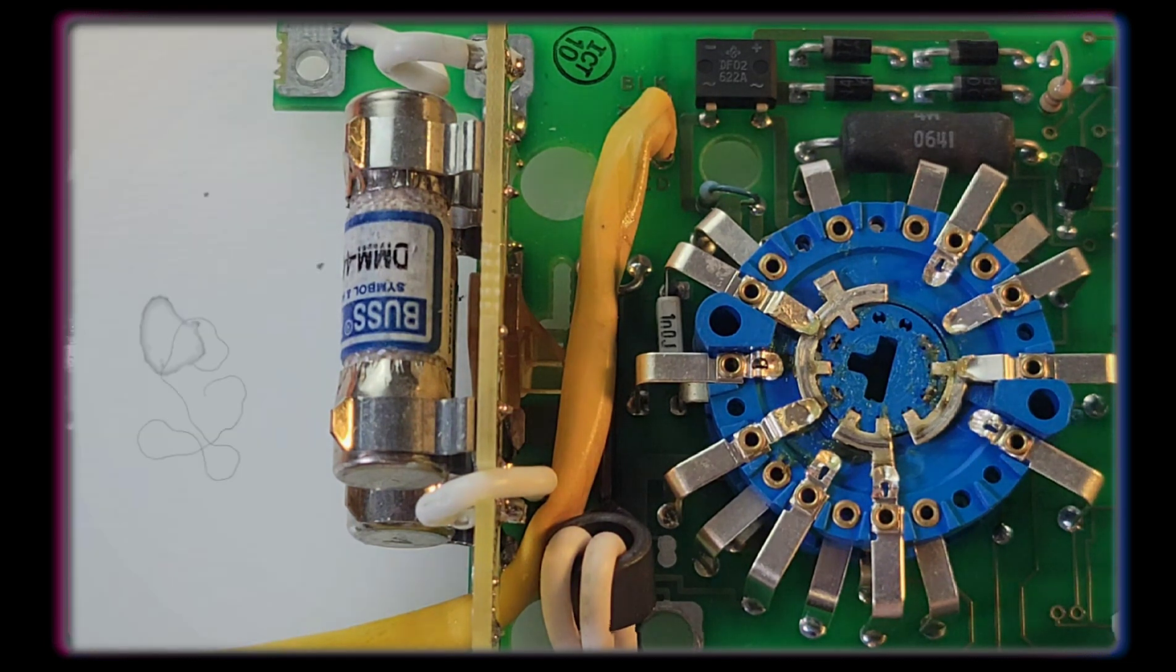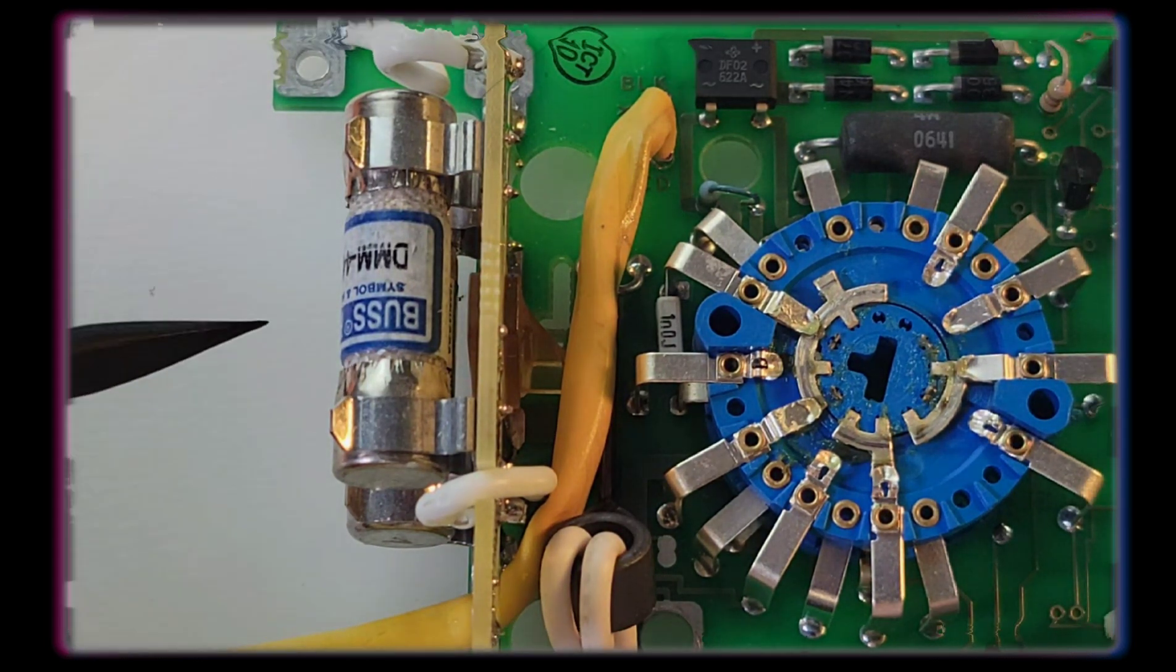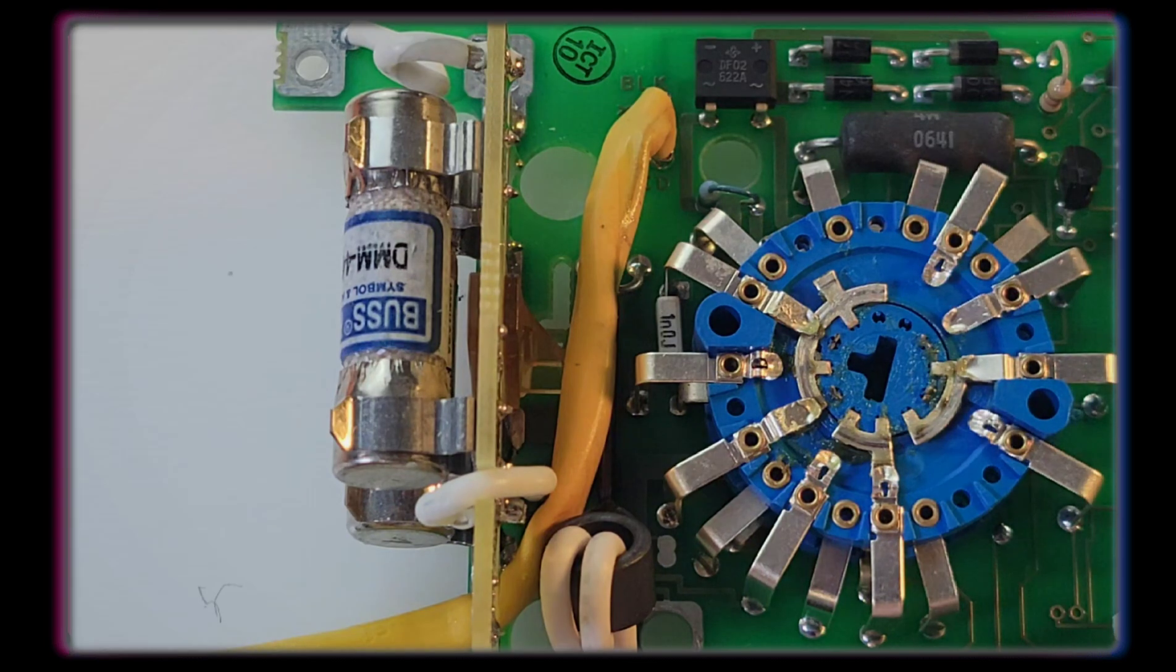A couple of big massive Busman fuses there, HRC. They're both rated at 1,000 volts, and one is an 11 amp, the other is a 100 amp. So Fluke is not messing around.